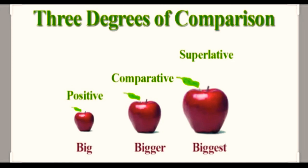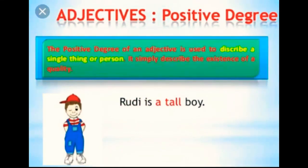You can understand that it is positive, comparative and superlative. One by one, we will know about it. First, our positive degree. Positive degree of an adjective is used to describe a single thing or person.